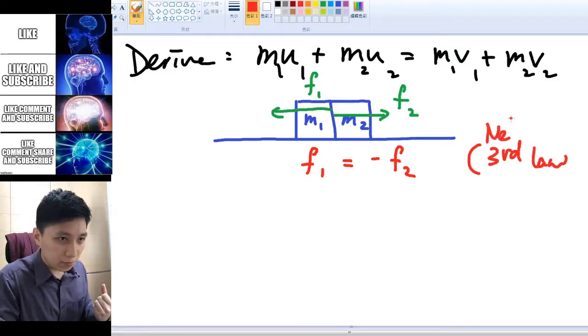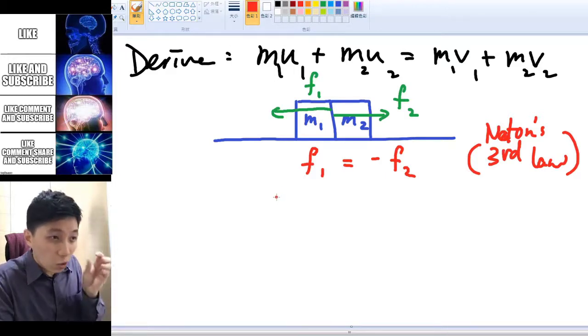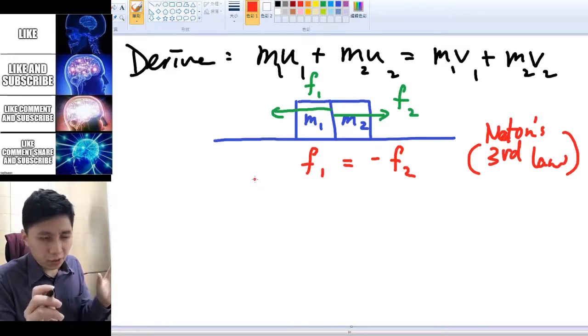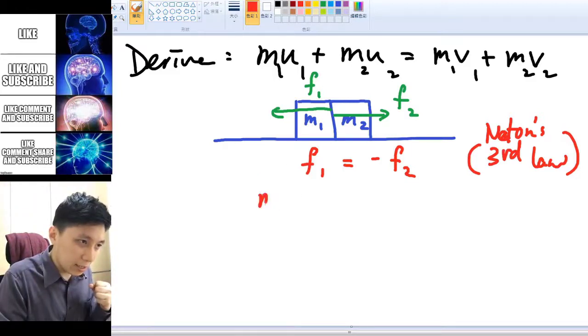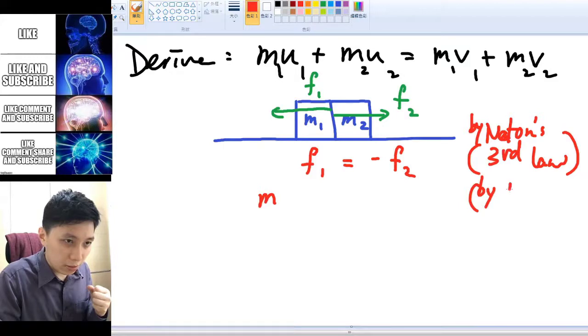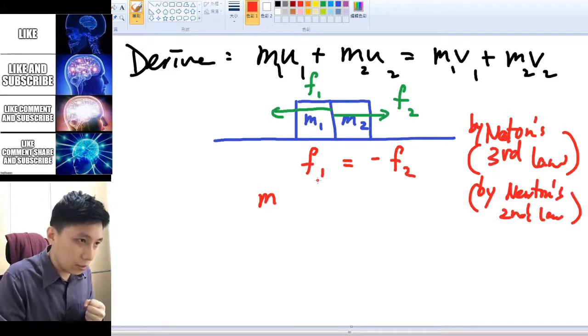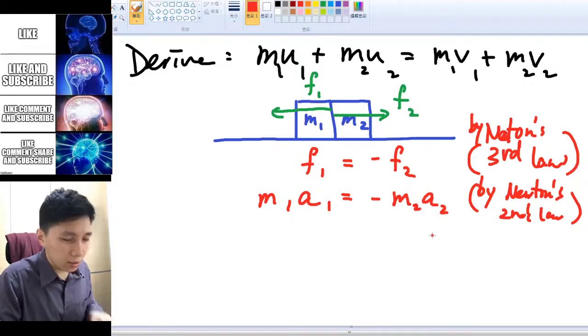And then the next step is, since this is the only force—remember there's no friction horizontally—and so this impact force is the only force, then we can say F equals to ma. So earlier it was Newton's third law, now it's Newton's second law, which is F equals to ma. So this F₁ will become m₁a₁, this F₂ will also become m₂a₂. Don't forget the negative.